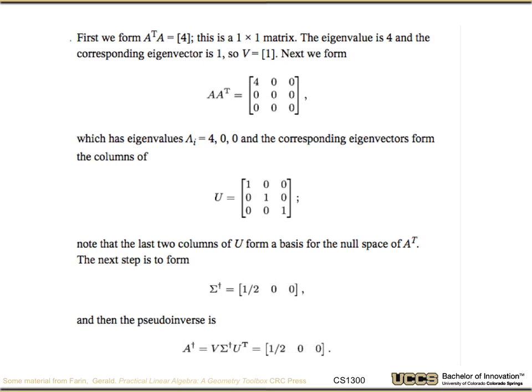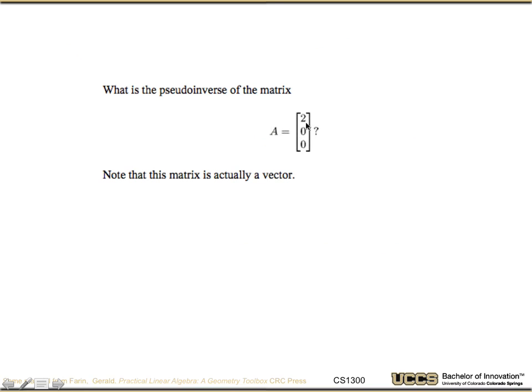So our pseudoinverse then is given by taking the transpose after we've done the SVD with the pseudoinverse element. So we get V, sigma inverse pseudoinverse, U transpose, which is just the vector [1/2, 0, 0]. And if we go back and you multiply that [1/2, 0, 0] with [2, 0, 0], you see you get 1.